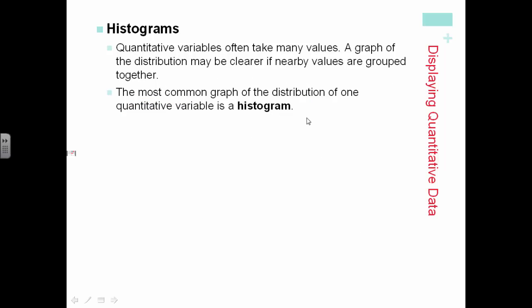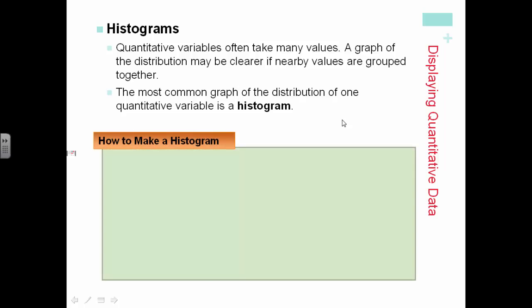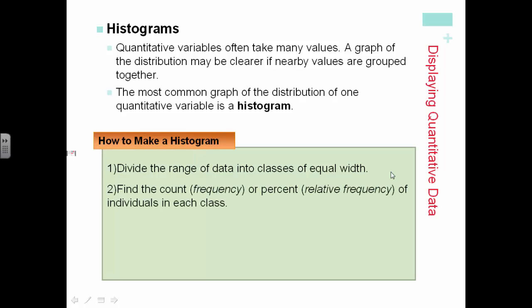A histogram is the most common graph of a distribution of one quantitative variable. To make a histogram, divide the range of data into classes of equal width. Find the count or frequency.